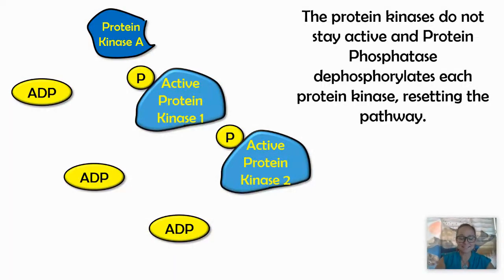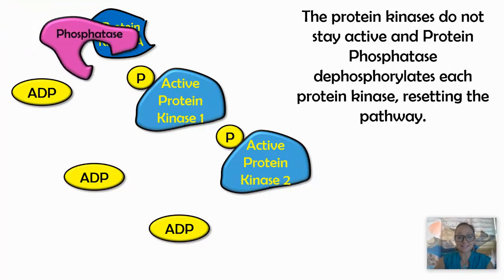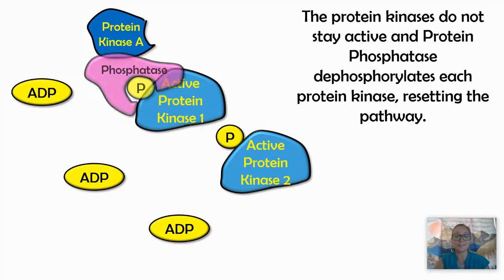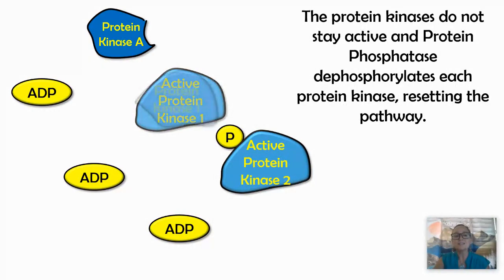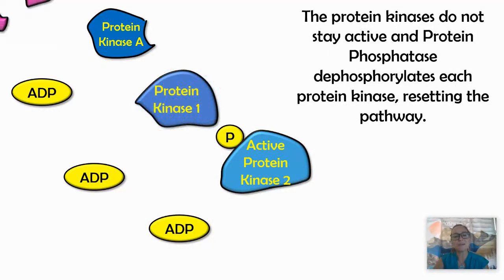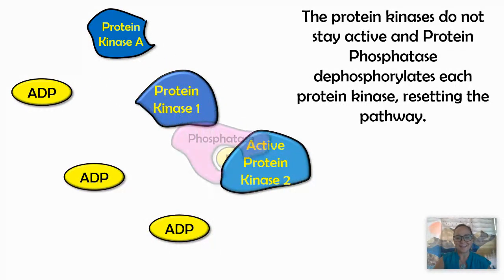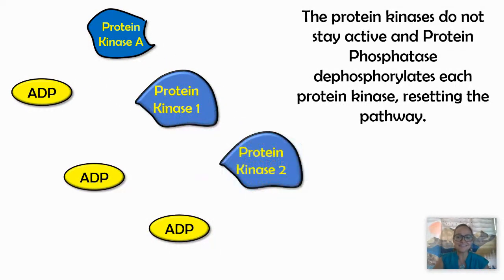These protein kinases don't stay active. The protein phosphatase enzyme comes and dephosphorylates each protein kinase to reset the pathway so it can happen again. That is how a G-protein linked receptor and a phosphorylation cascade generally work.